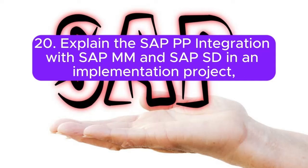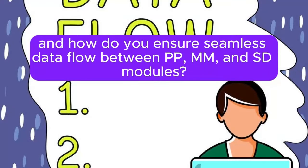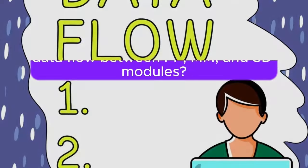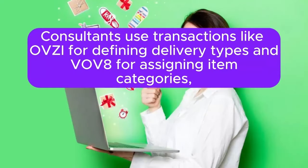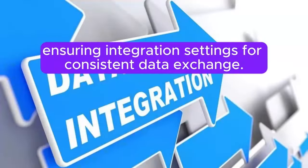Question 20: Explain the SAP PP integration with SAP MM and SAP SD in an implementation project. How do you ensure seamless data flow between PP, MM, and SD modules? Integration with SAP MM and SAP SD involves ensuring smooth data flow between production, procurement, and sales processes. Consultants use transactions like OVSI for defining delivery types and VOV8 for assigning item categories, ensuring integration settings for consistent data exchange.